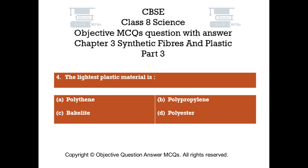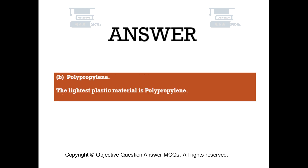Question number four. The lightest plastic material is: Option A: polythene. Option B: polypropylene. Option C: bakelite. Option D: polyester. The right answer is option B — polypropylene. The lightest plastic material is polypropylene.